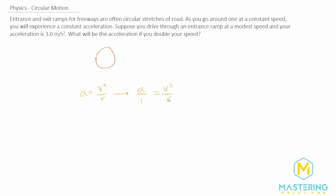We can make it easy on ourselves and say the radius is 1, then plug in and isolate for v. We'll multiply both sides of the equation by r, so r times acceleration equals v squared. Taking the square root of both sides, v equals the square root of acceleration times the radius.